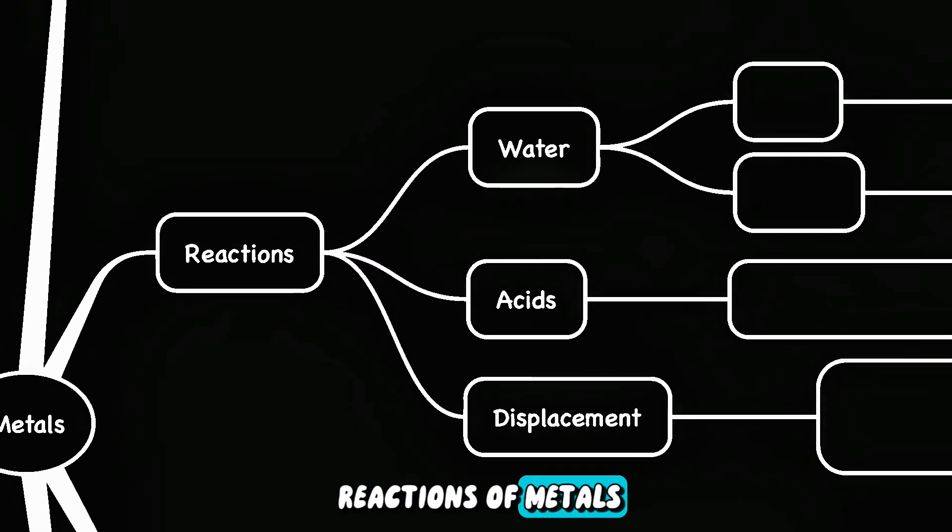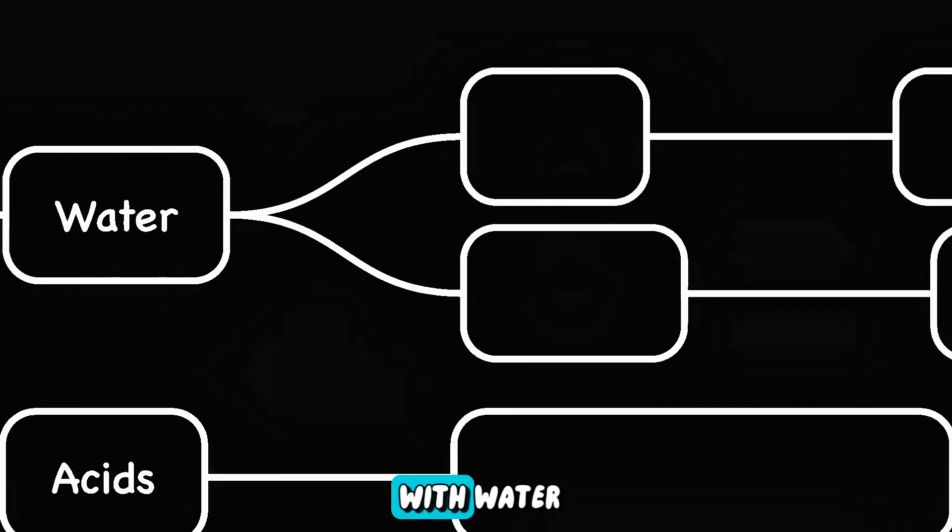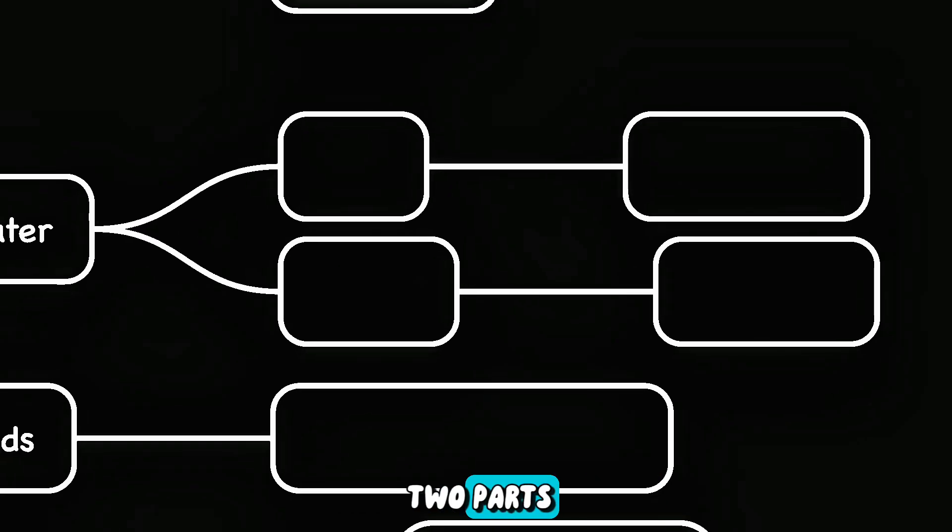Next, we'll talk about reactions of metals. There are three main types of reactions. First is reaction with water. Here, we're going to divide the reactions into two parts.